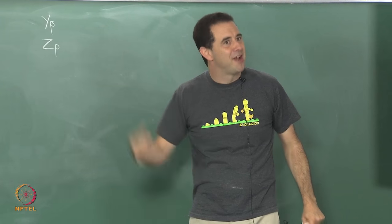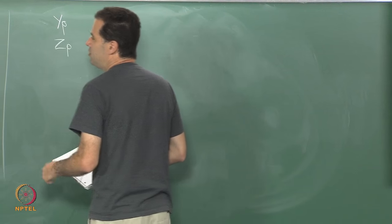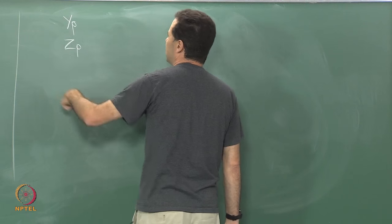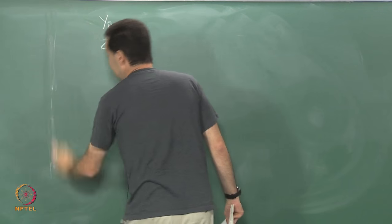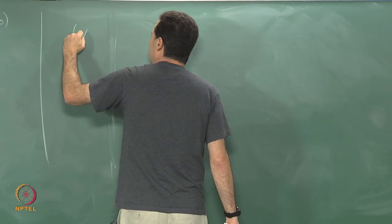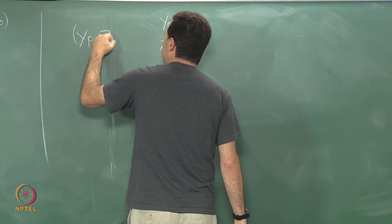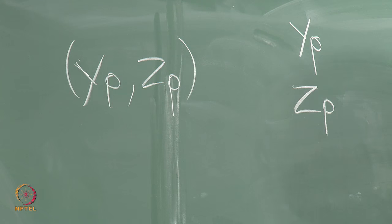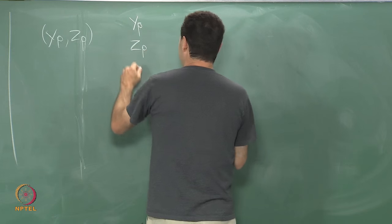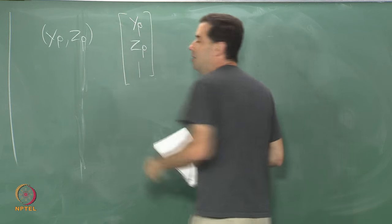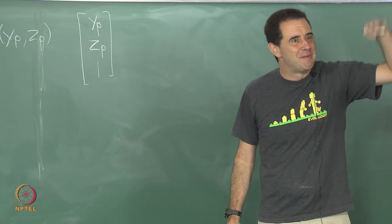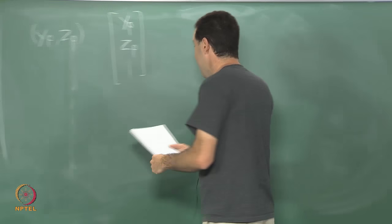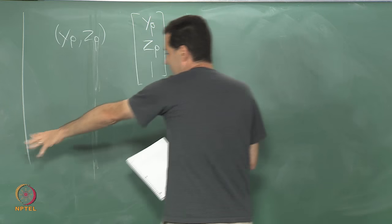I want to show this again with fewer dimensions. If I want to do this homogeneous transform, I start with y_p and z_p as two points — ignoring x because I have dropped one dimension — and I add an extra homogeneous dimension. So the 2D case becomes 3D. I write it as a 3-dimensional vector because I am doing homogeneous transformation matrices, adding an extra dimension.